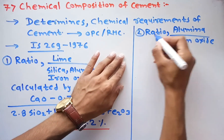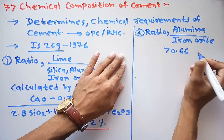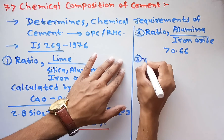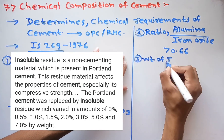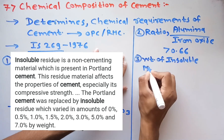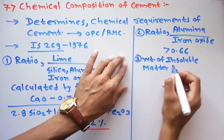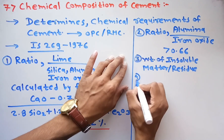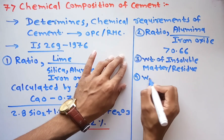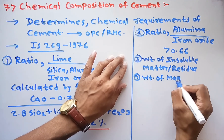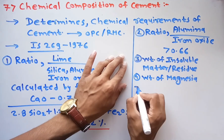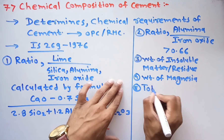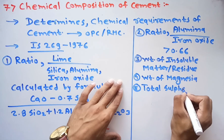The result of the alumina-to-iron-oxide ratio should be greater than 0.66. Next, we calculate the weight of insoluble matter, also called insoluble residue. Then the next parameter is the weight of magnesia, followed by the fifth observation which is total sulphate content.